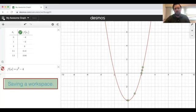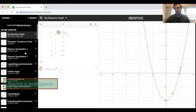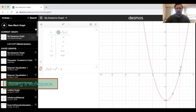Click in the upper left-hand corner where it says it has three horizontal bars. And notice I have a lot of saved graphs, and you will eventually as well.